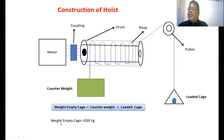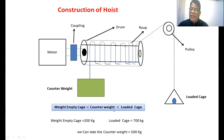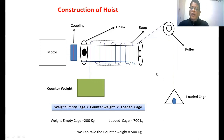For example, if the weight of the empty case is 200 units and the loaded case is 700 units, the counterweight is selected between these two values — say 500, 600, or 650 units — depending upon the design of the hoist. Now we see the four quadrant operation of this hoist.